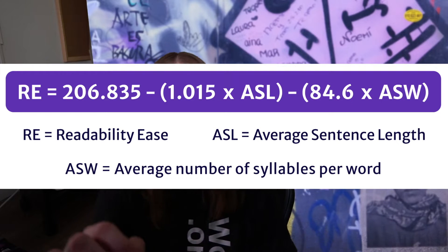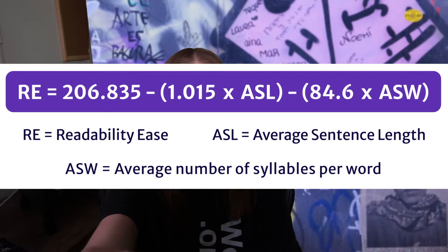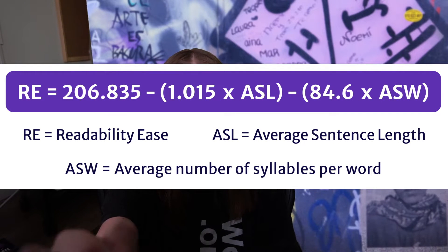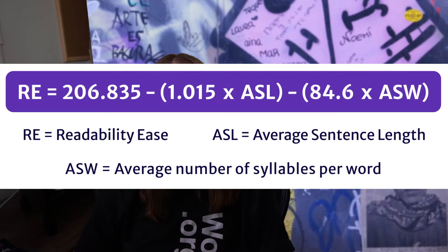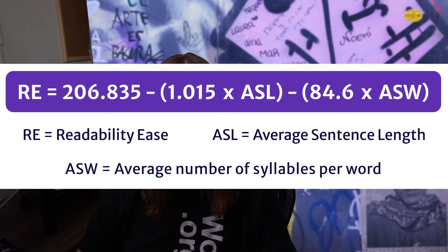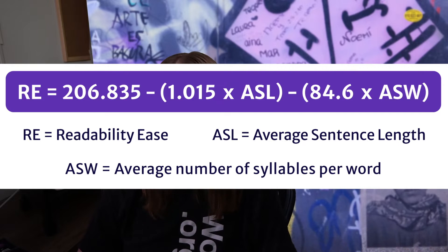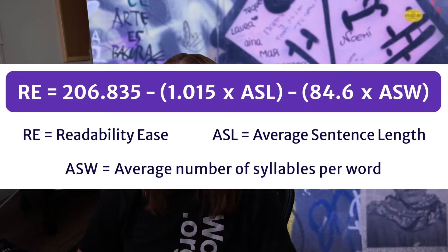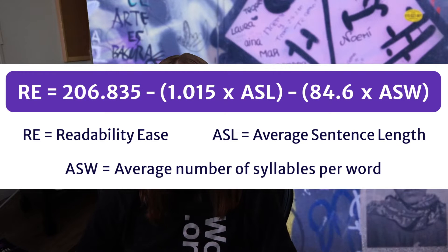So this is the algorithm that represents it. This measurement helps you understand content readability based on the average sentence length and the average number of syllables per word. Plugging in the relevant numbers, this algorithm creates a score of readability ease. This helps you understand if your content's readability matches the ideals of your target audience.